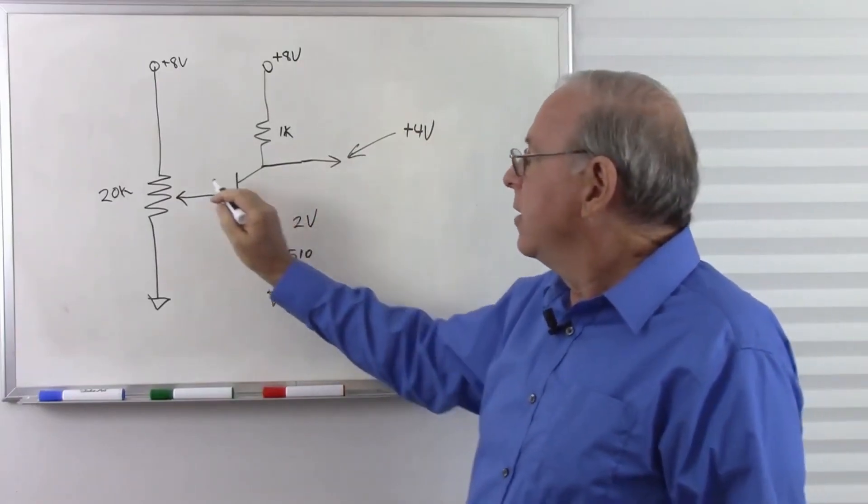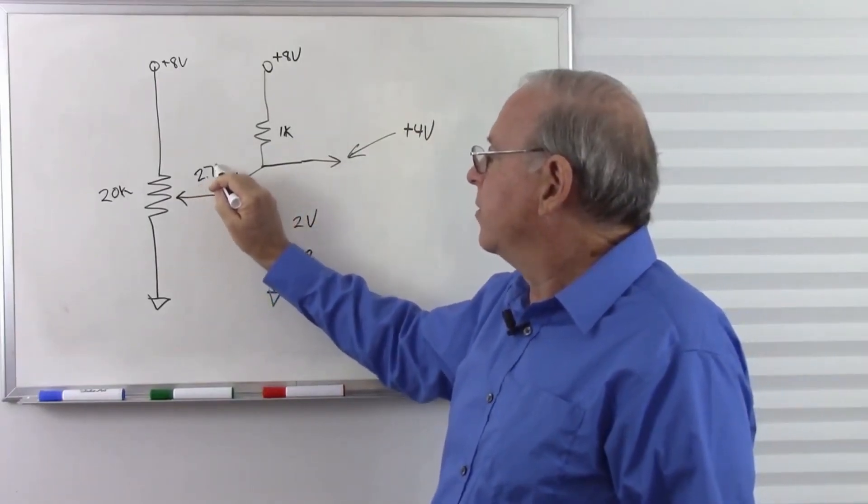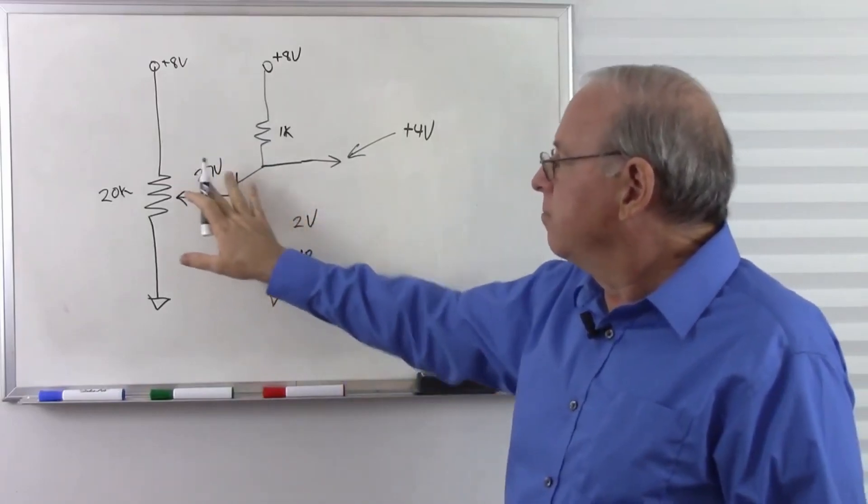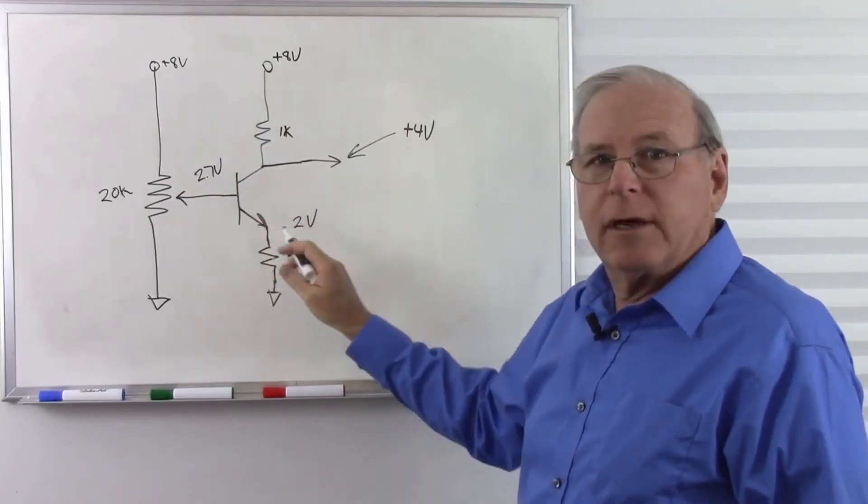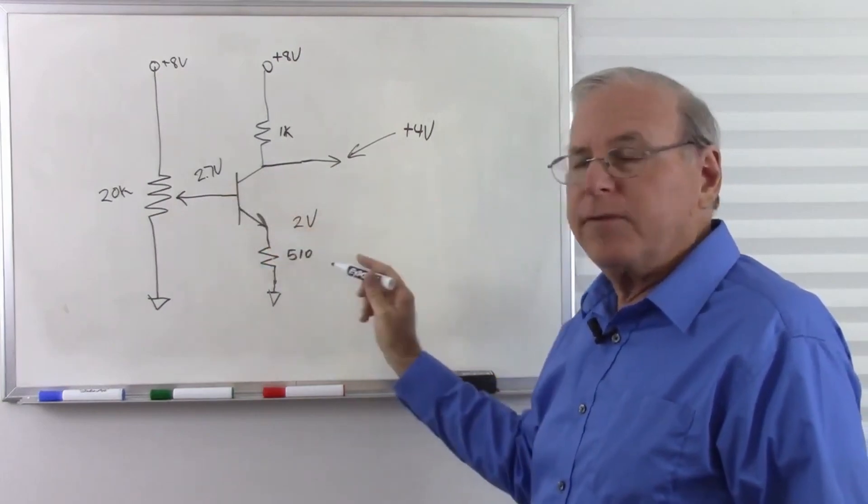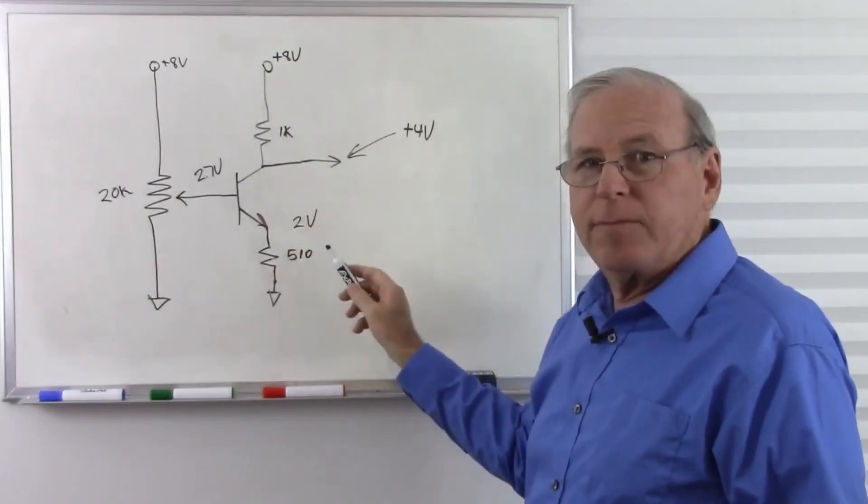And expect about 2.7 volts there. So it's 7 tenths of a volt above the base, so the base is 7 tenths of a volt above the emitter, pretty much like we expect.